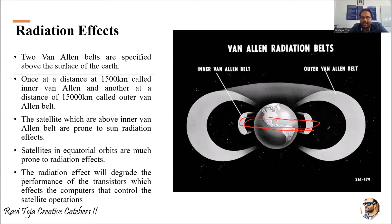To summarize, we have two types of Van Allen radiation belts: the inner Van Allen radiation belt, which is nearer to the earth at 1500 kilometers, and the outer Van Allen radiation belt, which is far away from the earth at 15,000 kilometers. All the radiation is produced due to the sun. If the satellites get affected by this radiation, all the parts of the satellite get affected, leading to low satellite performance and wear and tear of satellite operations. This is how radiation affects the satellites moving in the equatorial orbit.